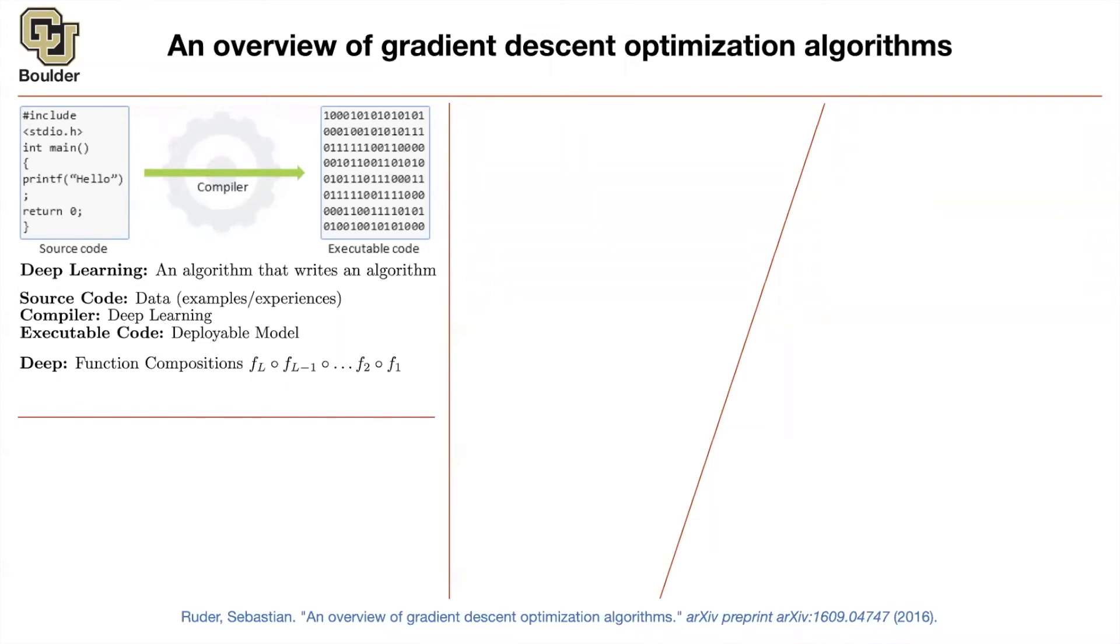But now the cool thing about deep learning is that these functions, you don't have to write them yourself. F1, you just give it the structure of the family of the functions that could happen. And then it's the role of training to find out what is F1, what is F2. So you don't write your own source code. And what is learning in deep learning?